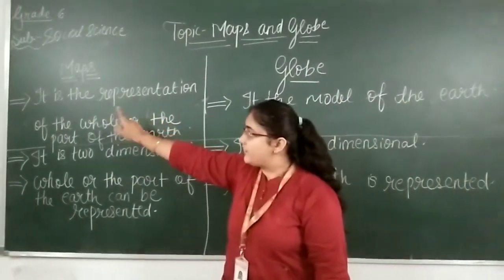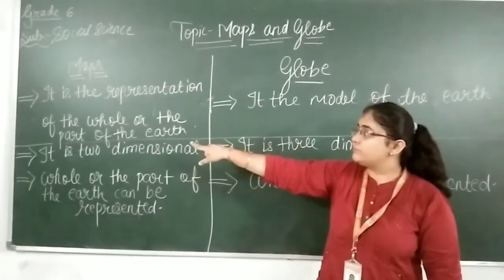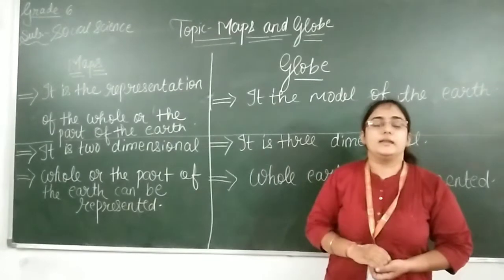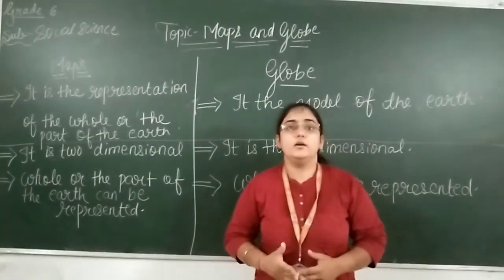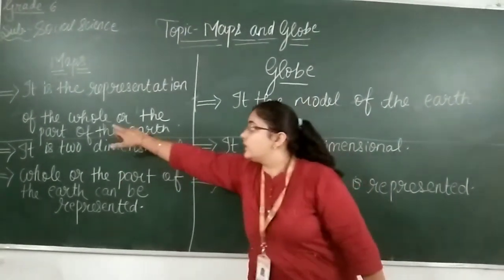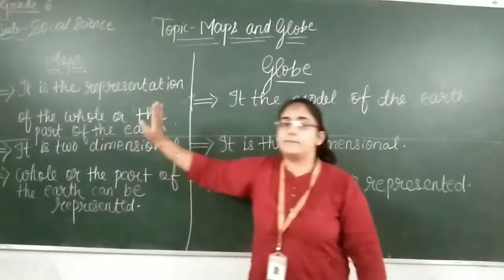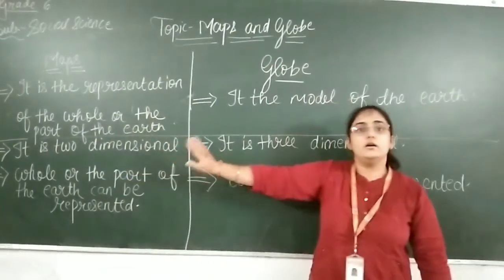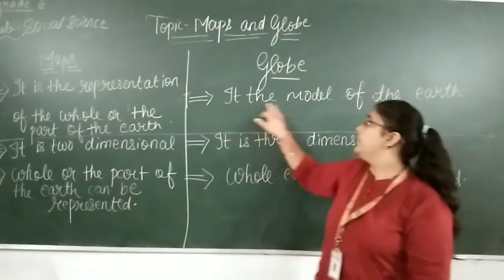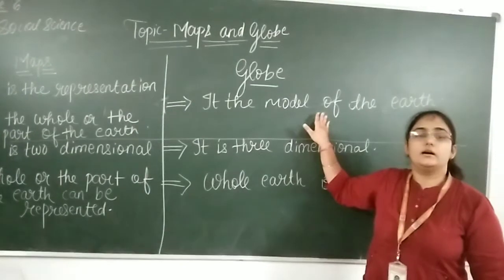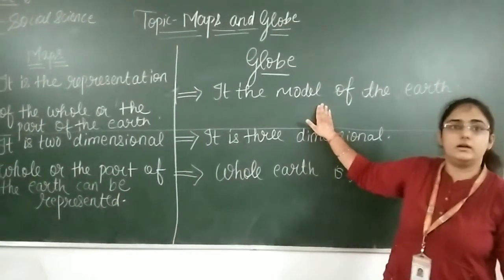First one is map. What is a map? A map is the representation of the whole or the part of the earth. Whole means the earth's entire size and part means some portion of it. And what is globe? It is the model of the earth — earth's round model, similar to a three-dimensional model of the earth.